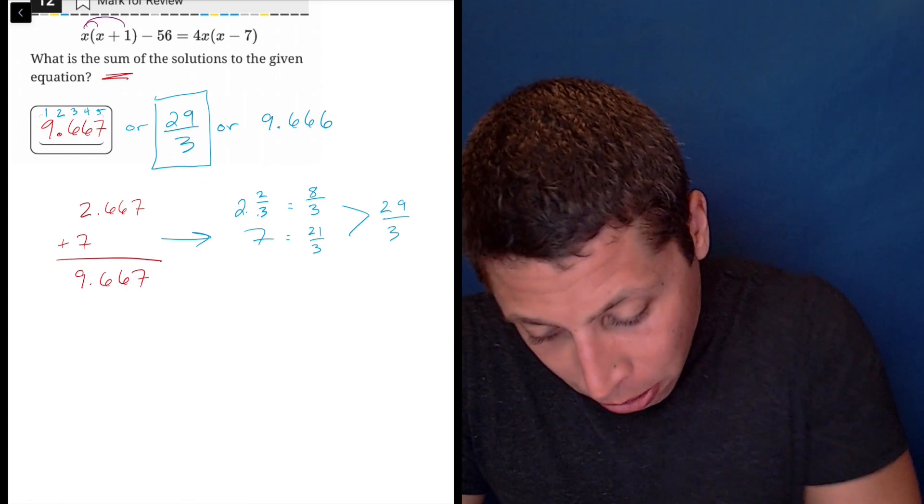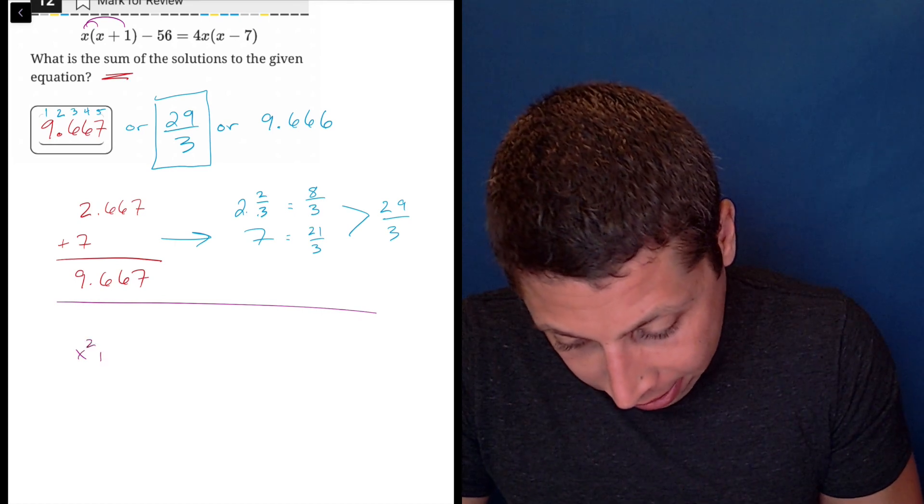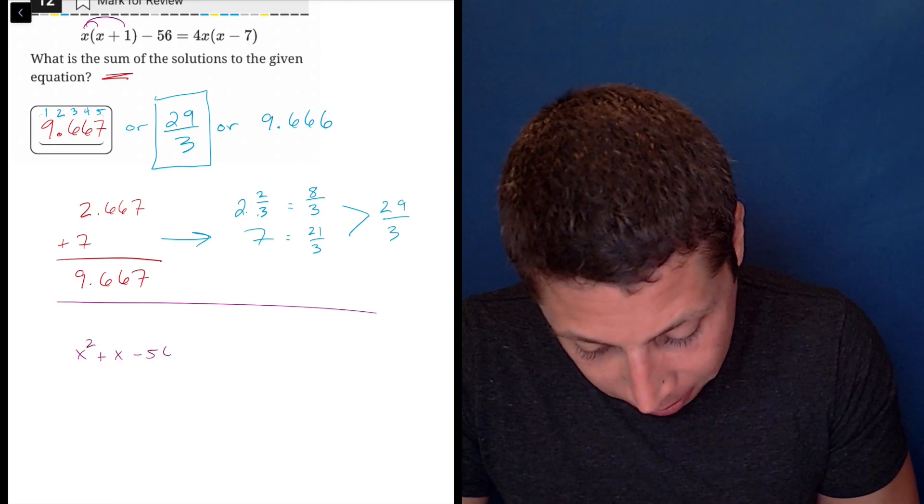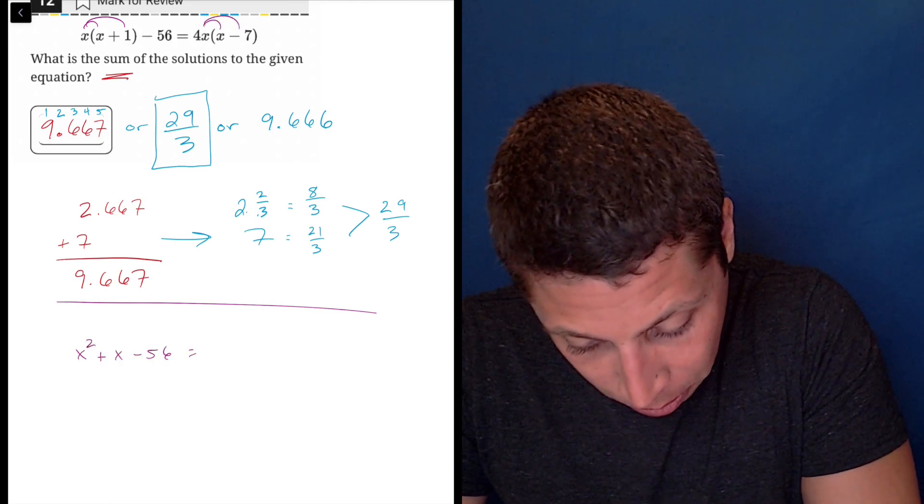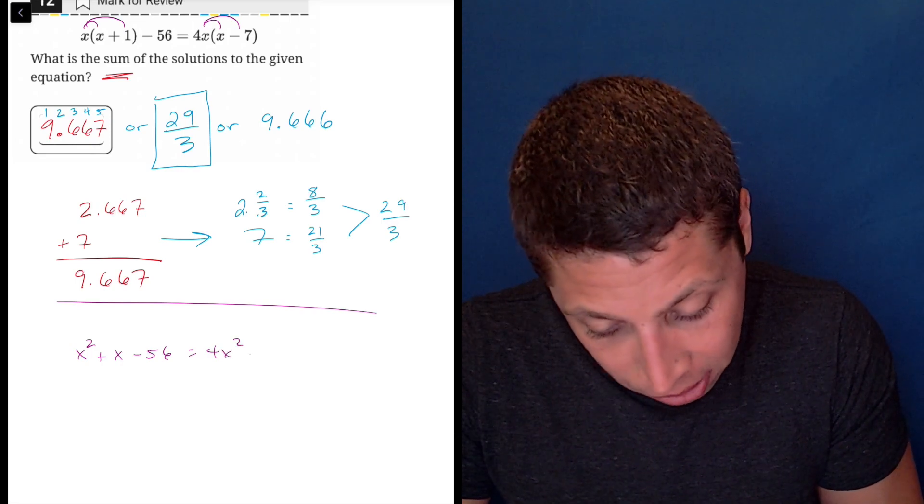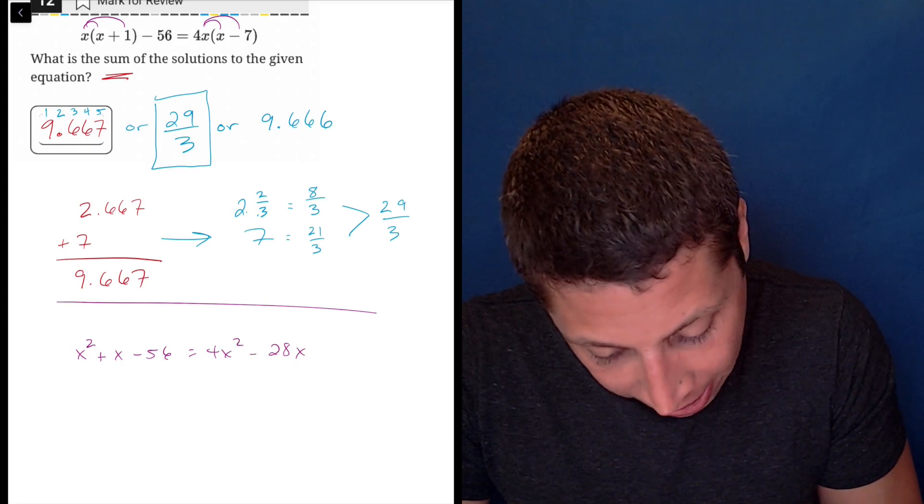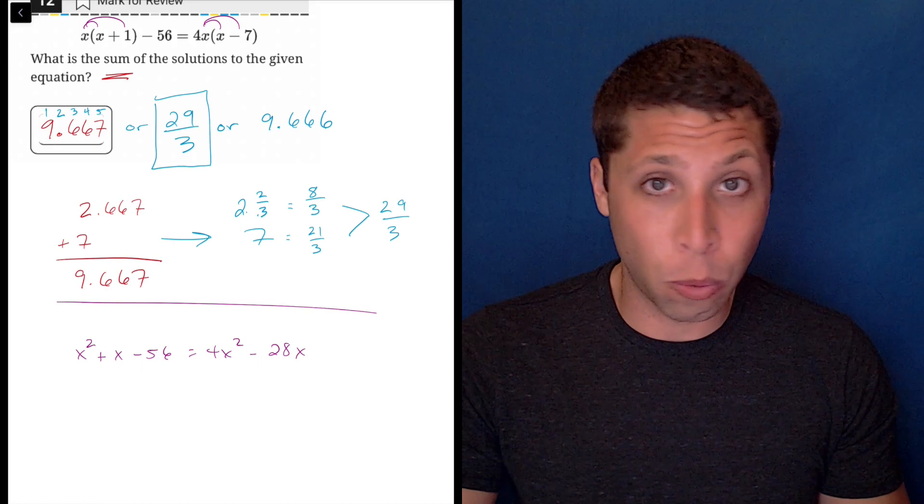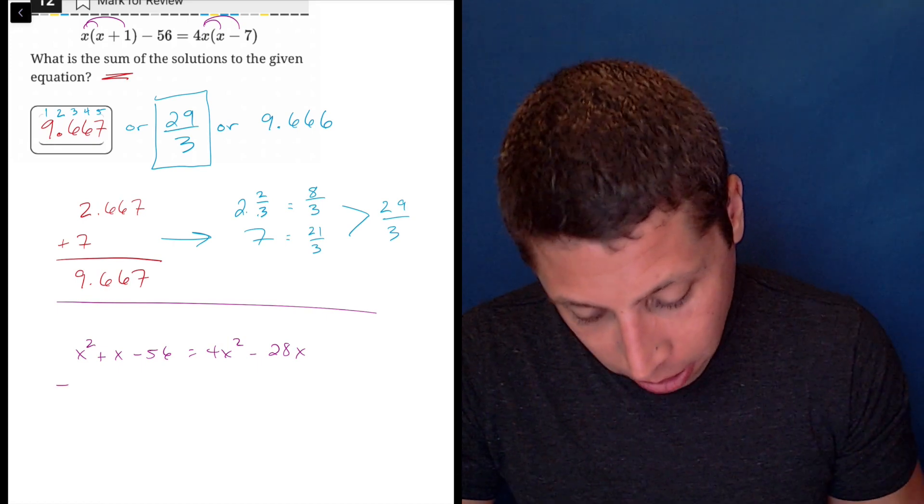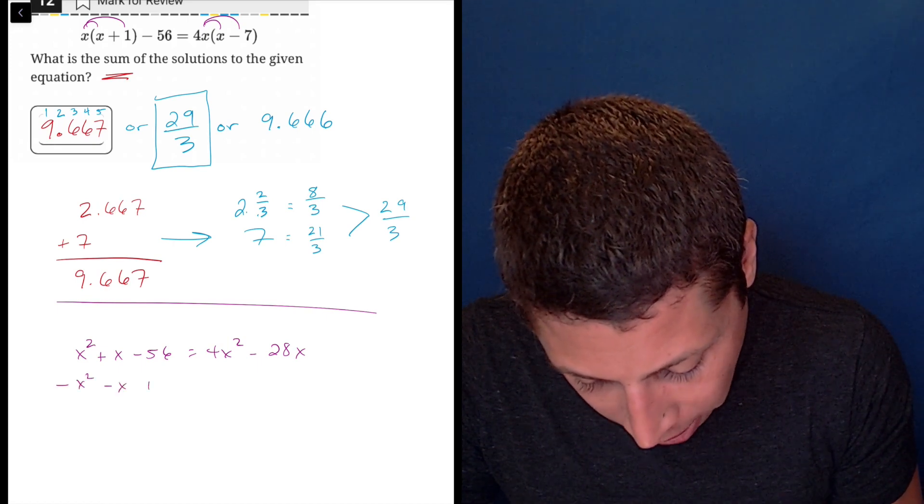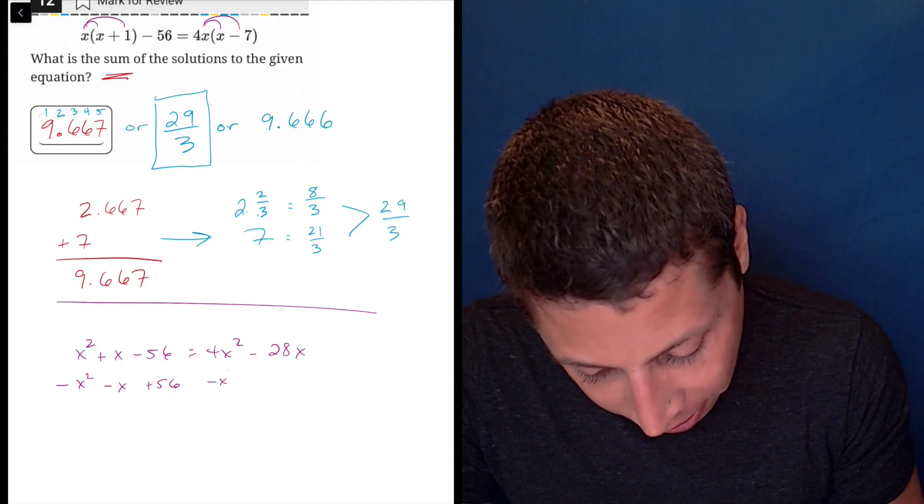So I'm going to first distribute. So that's going to be x squared plus x minus 56. Distribute again equals 4x squared minus 28x. I'm going to bring all my stuff to one side. If I have a quadratic, I want everything on one side. So let's subtract x squared, let's subtract x, let's add 56.